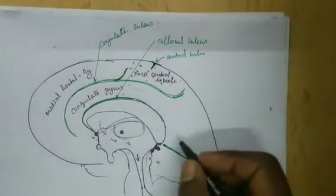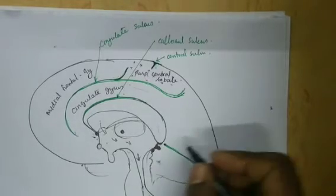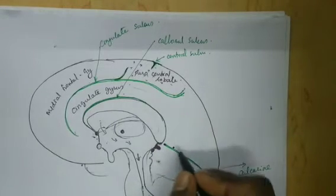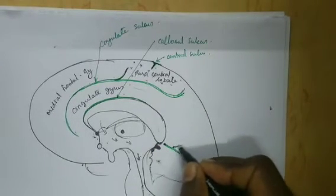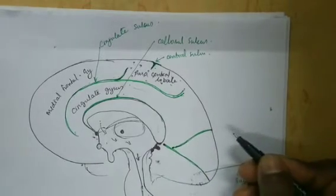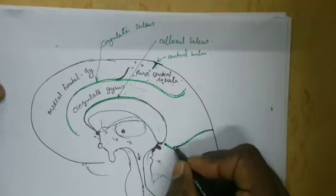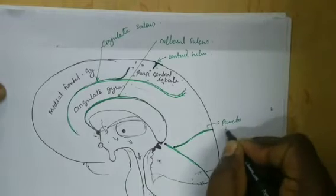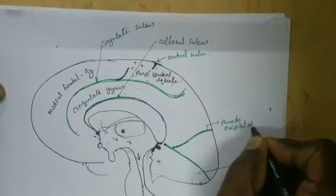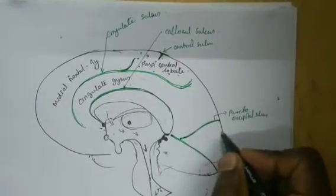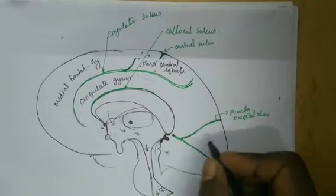There is one more sulcus which starts a little distance from the origin of the calcarine sulcus and it goes to divide the parietal from the occipital lobe, and this is called the parieto-occipital sulcus. Between these two sulci we have a triangular area called the cuneus.